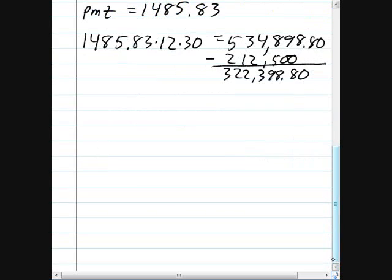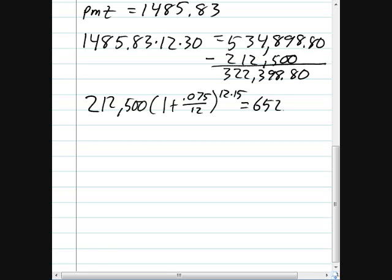So to do this, the first thing we need to do is ask ourselves, at the end of 15 years, how much money would the bank expect to have? And we are going to use the original concept of where the loan payments come from. The $212,500 could have been invested in a compound interest account for those 15 years, for a future value of $652,258.49.